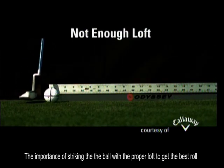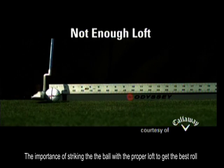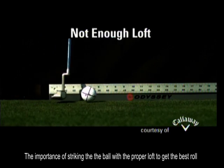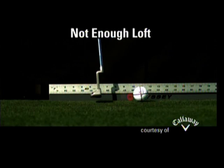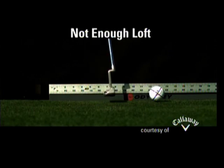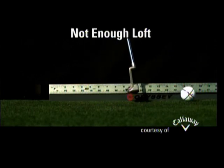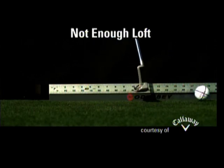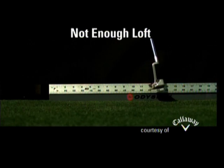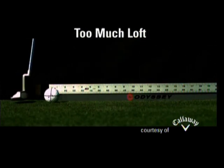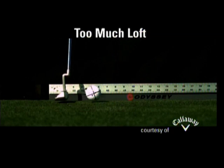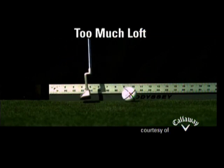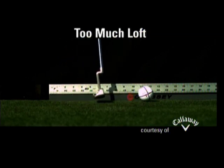If we have less than four degrees of loft, it drives the ball into the ground and the ball will be bouncing. If we hit it with more than four degrees of loft, the ball comes up in the air with backspin bouncing before it starts to roll.